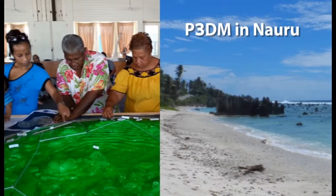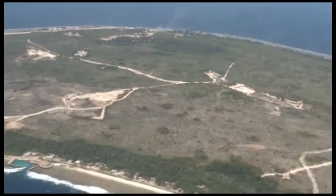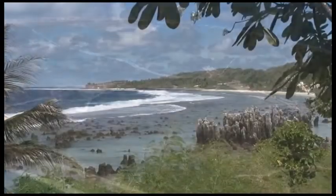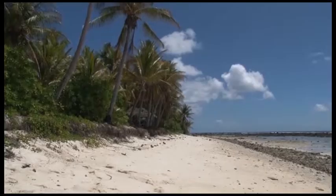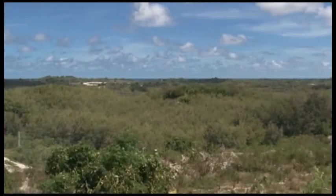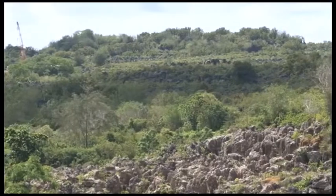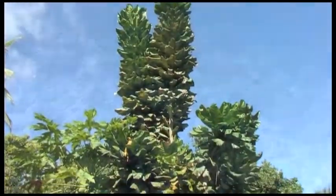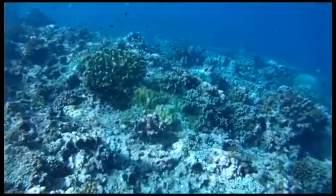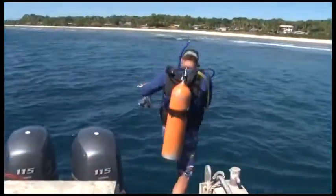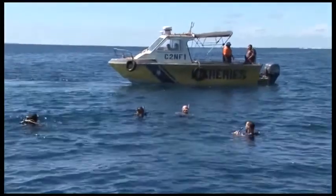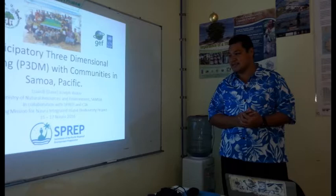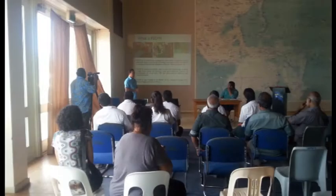The Republic of Nauru is one of the world's smallest independent nations. It is unique, being an isolated sea mound and a single raised phosphatic limestone island. As a result of its remoteness and rare geology, Nauru's terrestrial ecosystems have relatively small numbers of species across different groups, and its marine ecosystems have limited diversity. However, globally rare species have been recorded in recent surveys. Nauru was the next Integrated Island Biodiversity country to initiate a P3DM process and develop a 3D model in April 2016.